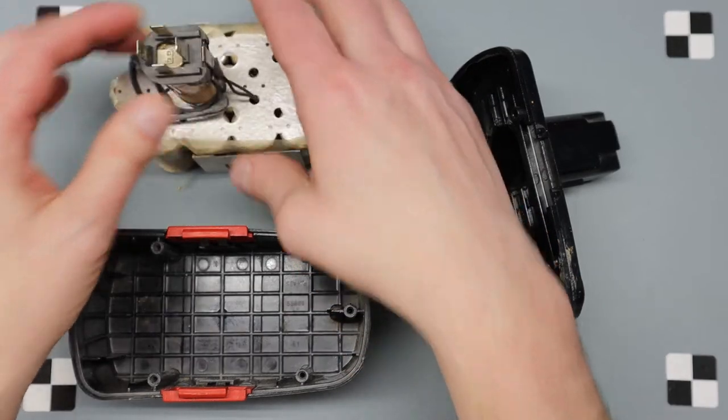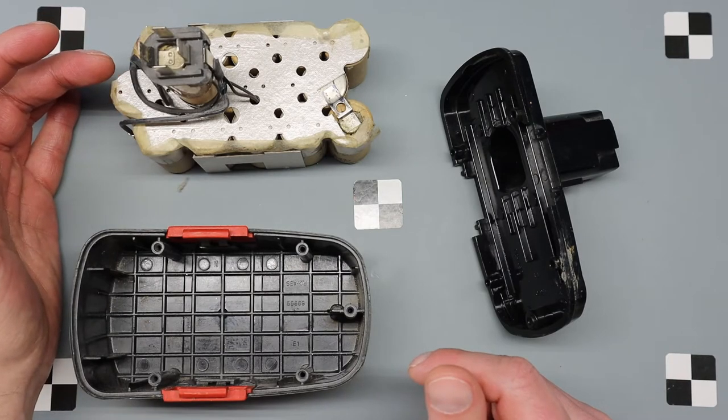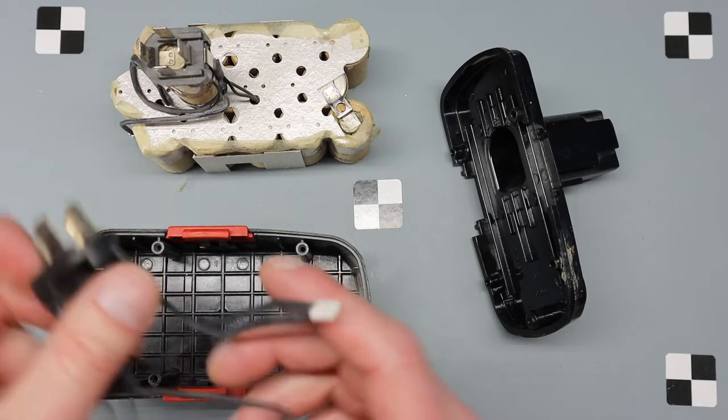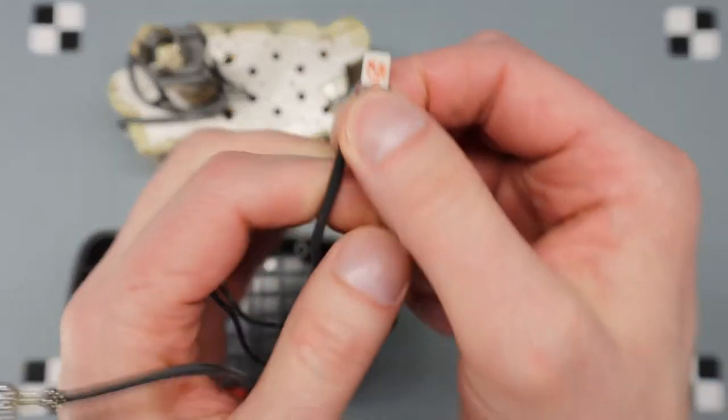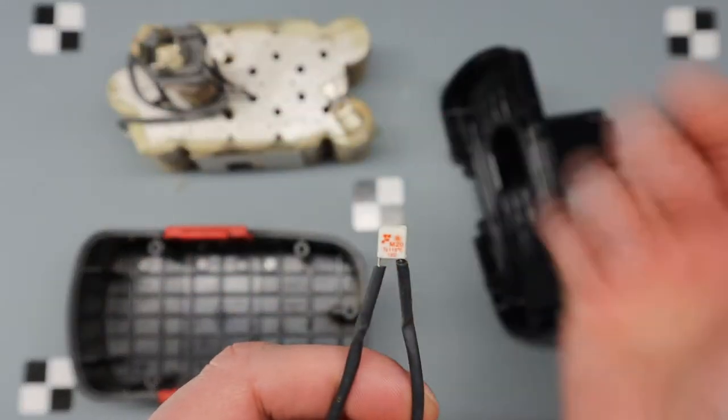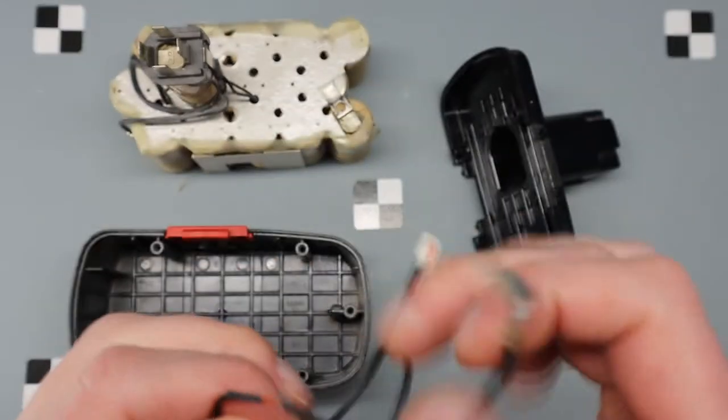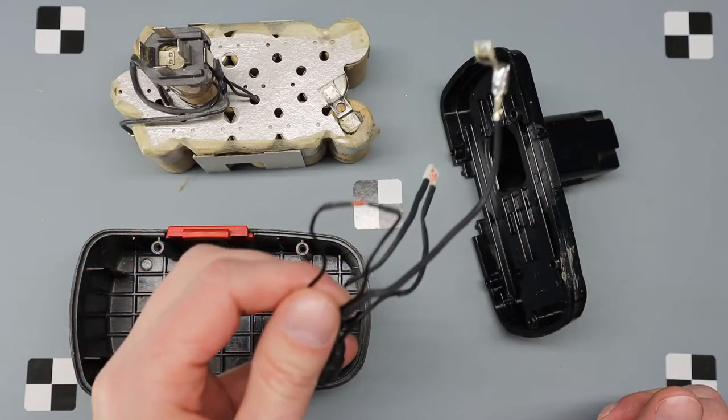It's got four pins on the top. Two of them are for positive and negative. The other two have to do with these sensors. One is a thermal fuse, and the other is a thermistor.